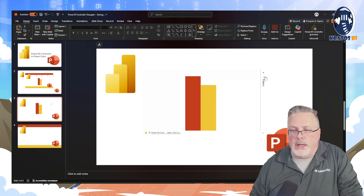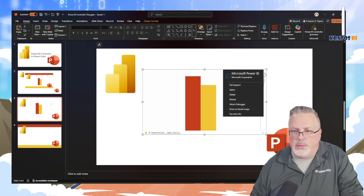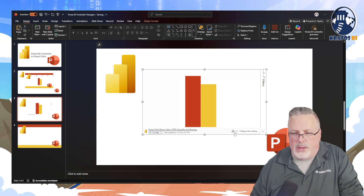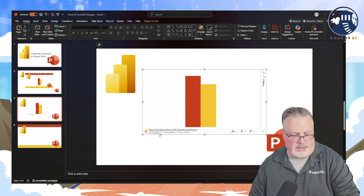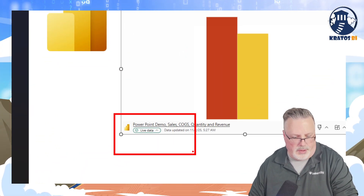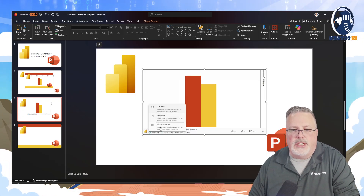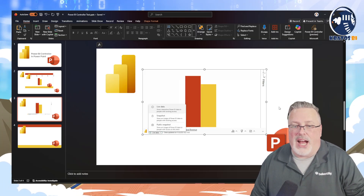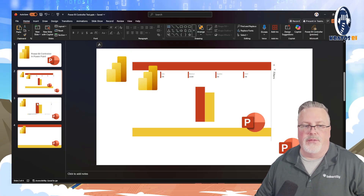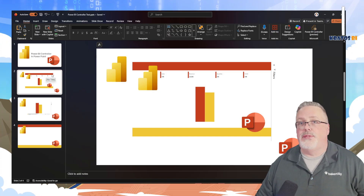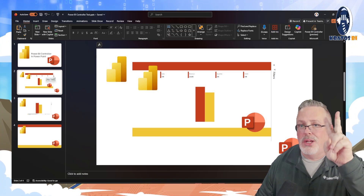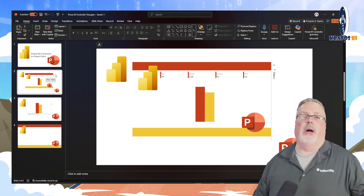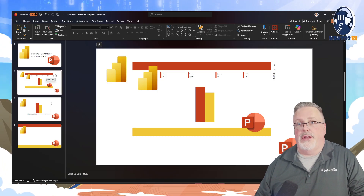But like I said, if you wanted to save this as a picture, you'd have to open it up and go down to this Live Data button right here, and change it to a Public Snapshot. Not terribly hard, but not super easy when you have to go and do it for each visual. This is a simplified version with just two, but if you're talking about a deck you publish for your board on a monthly basis, you could have hundreds of slides.